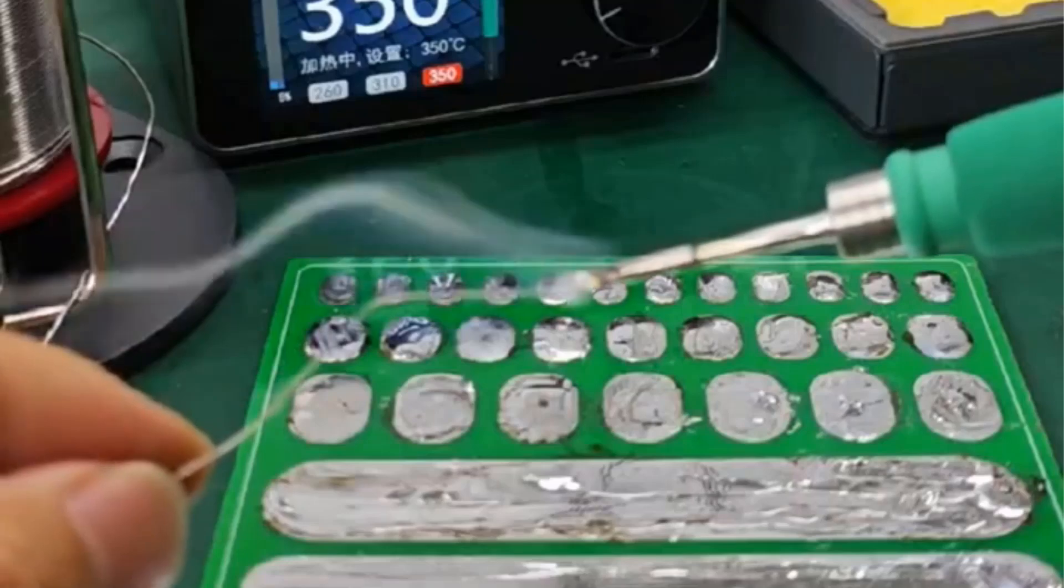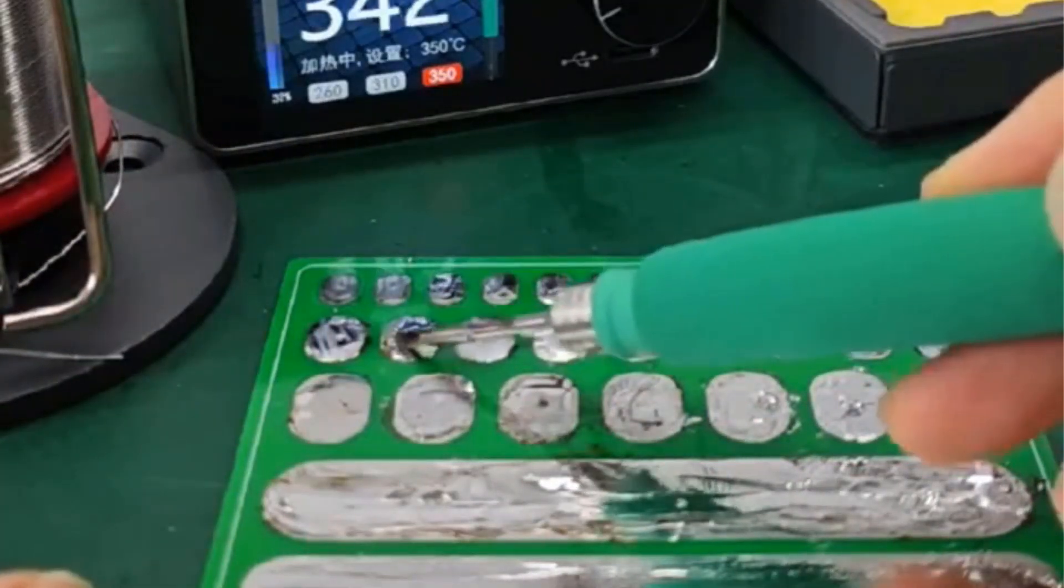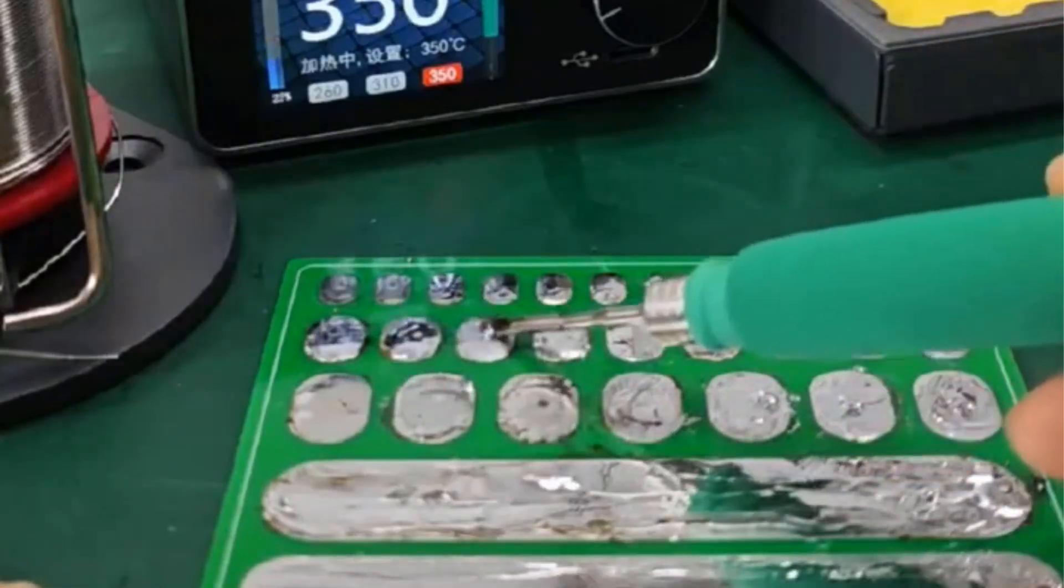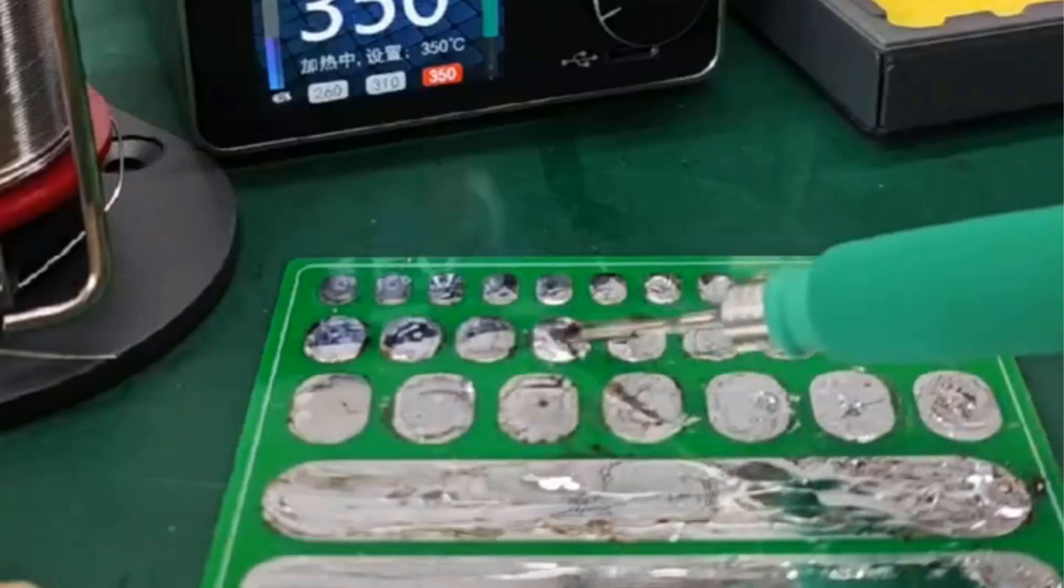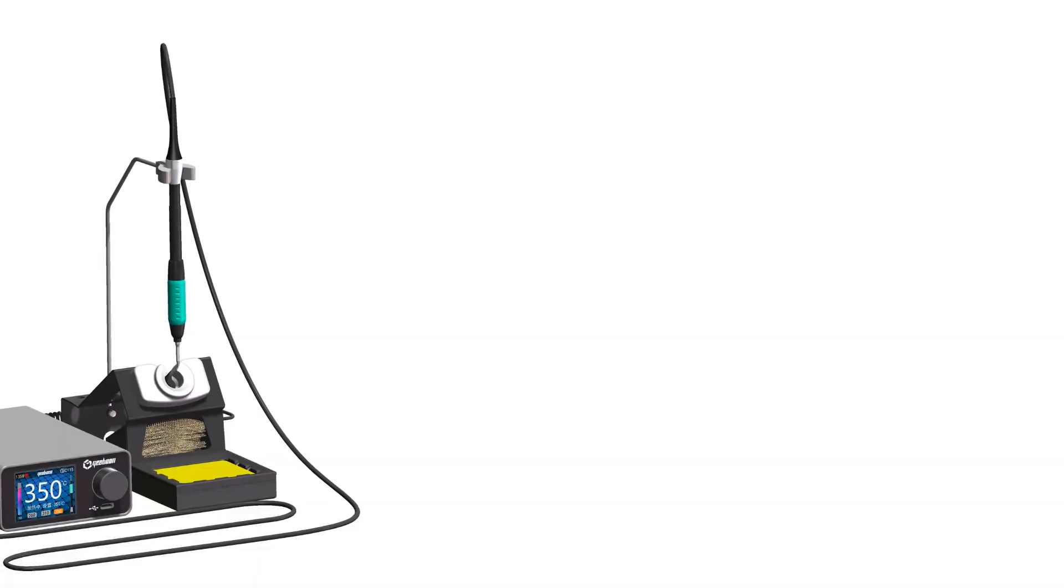It offers two models: the TC20A with a maximum power of 240W, and the TC20B, ideal for larger soldering jobs, with a maximum power of 380W. Key features include short-circuit protection with a response time of less than 12 microseconds, hot-swappable tips,